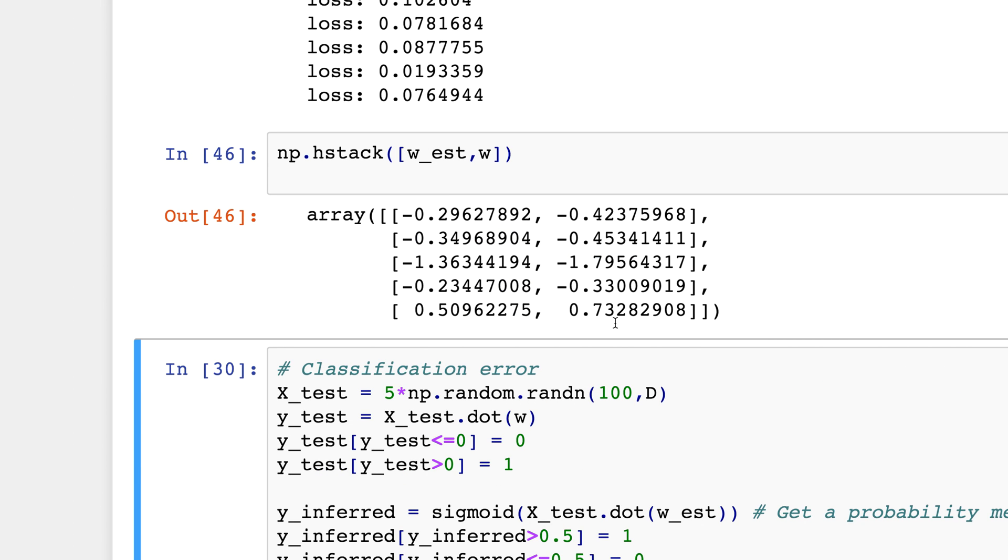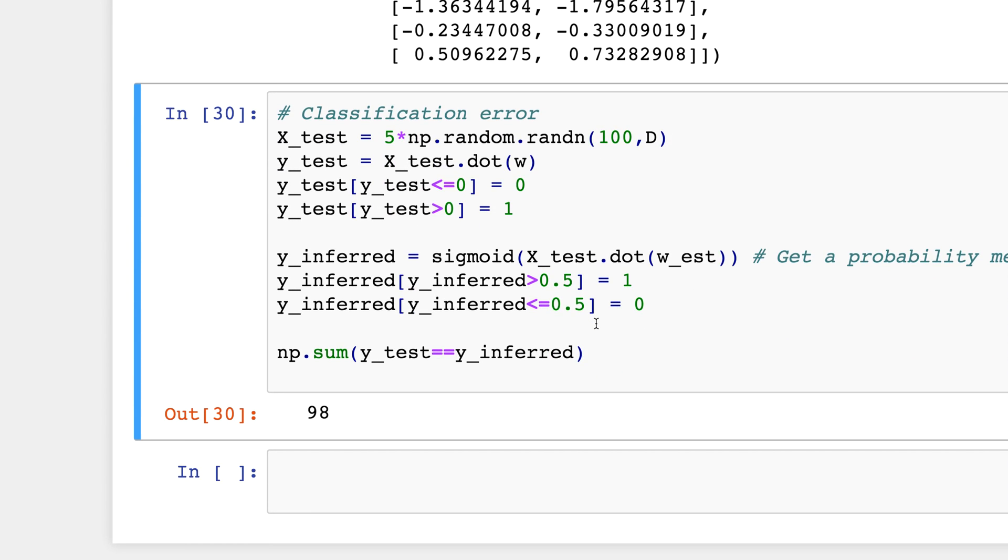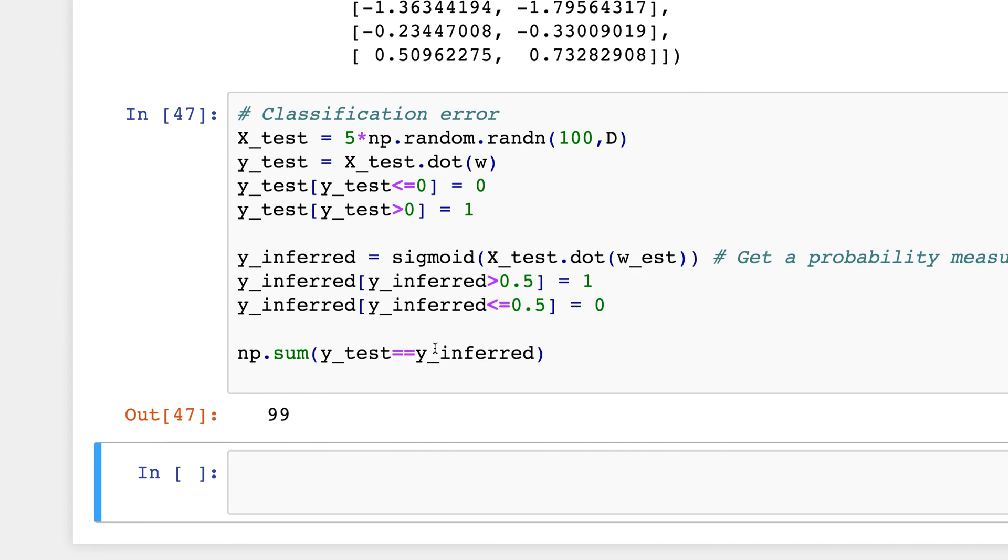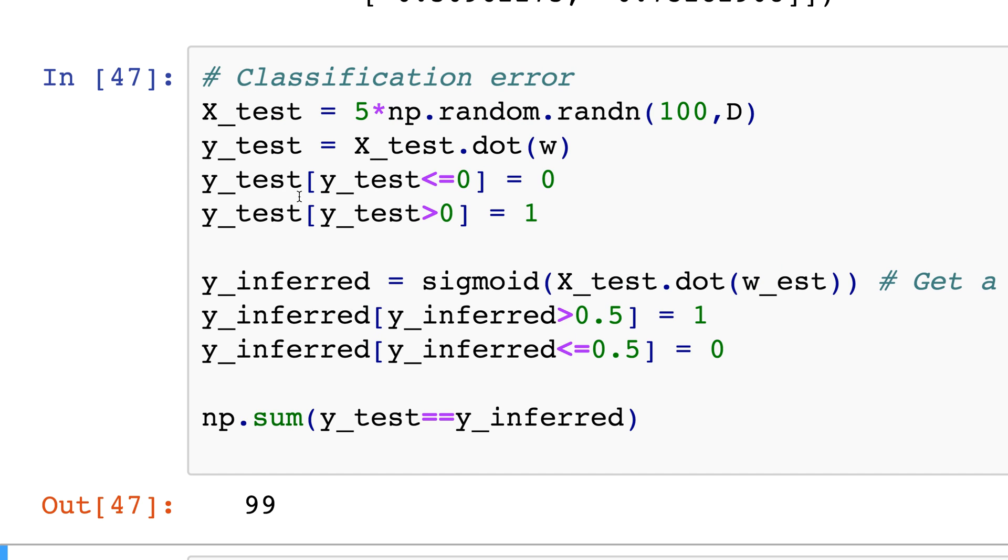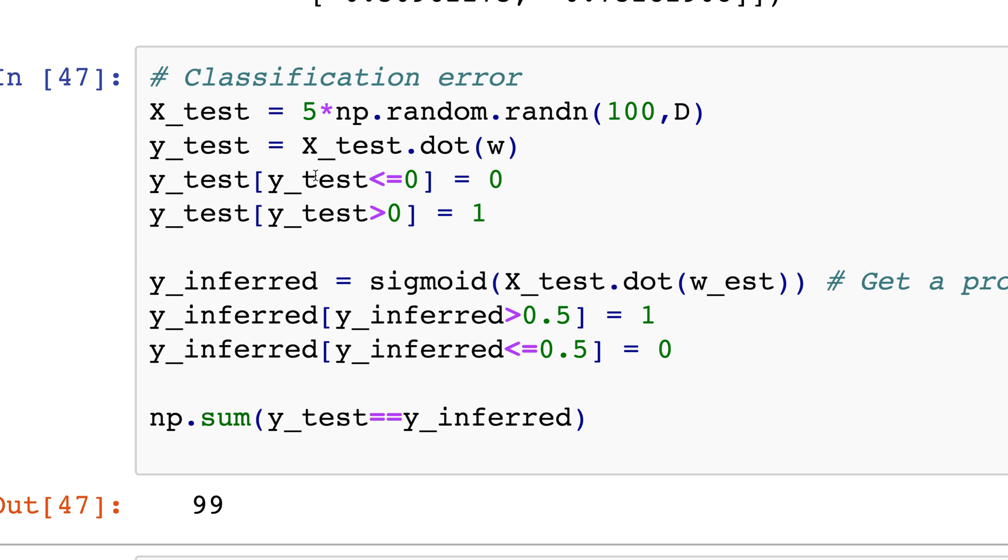So if I check it against a test set, the first four lines over here is creating a test set, a random test set with the true w that I had from before, and then I infer it.